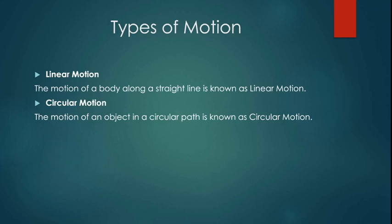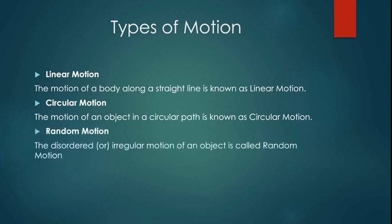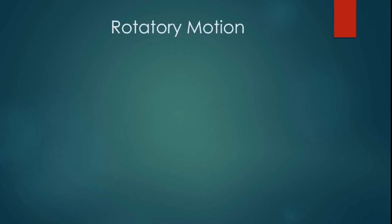There's random motion: the disordered or irregular motion of an object is called random motion.